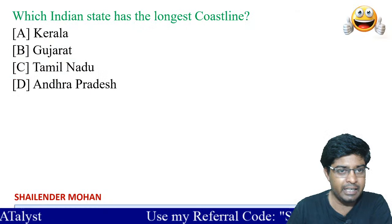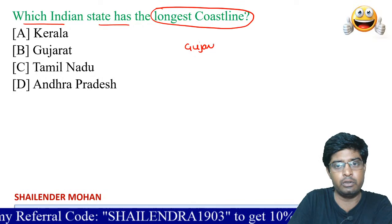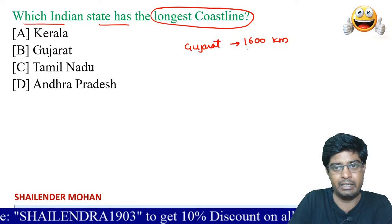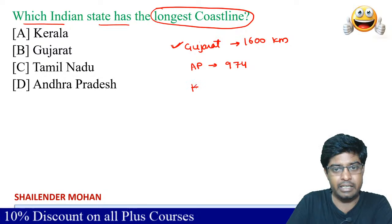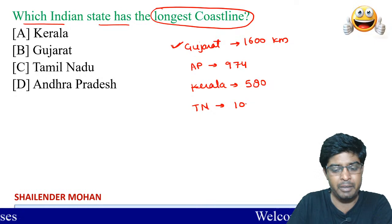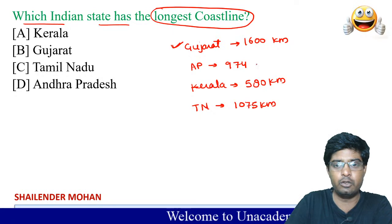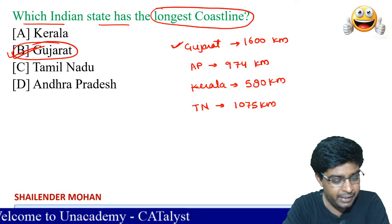Which Indian state has the longest coastal line? The answer is Gujarat with approximately 1600 km of coastline. After Gujarat comes Andhra Pradesh at 974 km, then Tamil Nadu at approximately 1075 km, and Kerala as well. So the longest coastal line in India belongs to Gujarat.